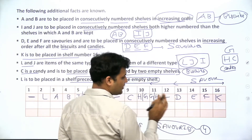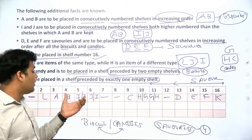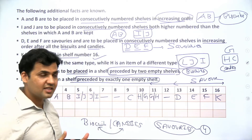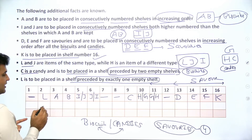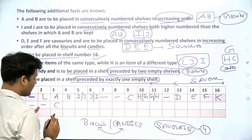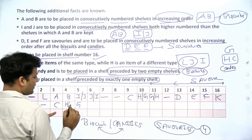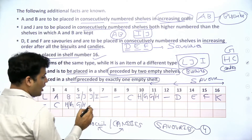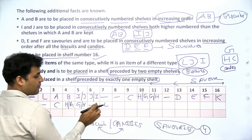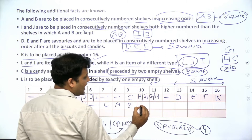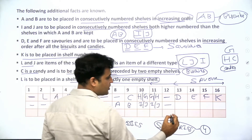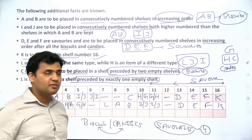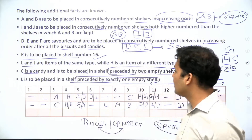There is also a second possible case: candies can come before biscuits. If candies come first, two empty shelves precede C, then H and G follow in some order. After the candies cluster, one empty shelf precedes the biscuits, where L comes first preceded by one empty shelf, followed by A, B, and then I and J. Then one empty shelf, followed by the savouries cluster.